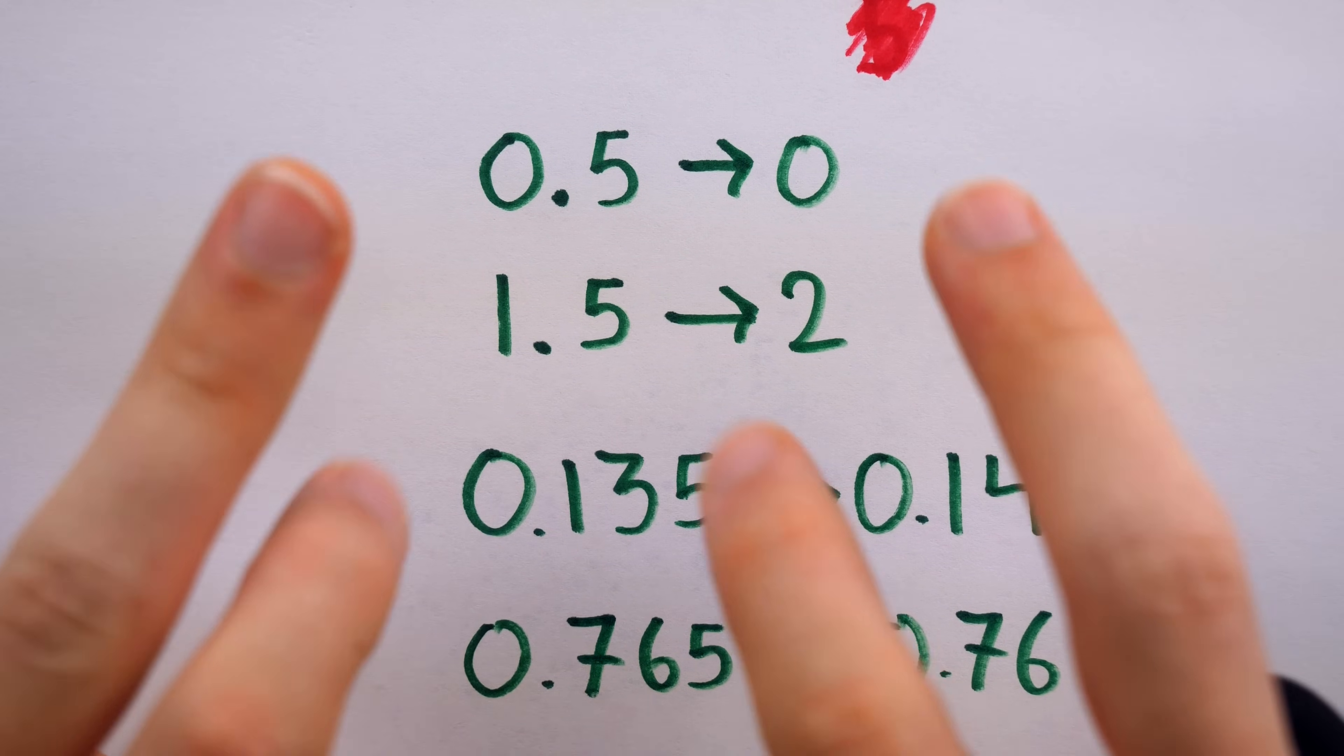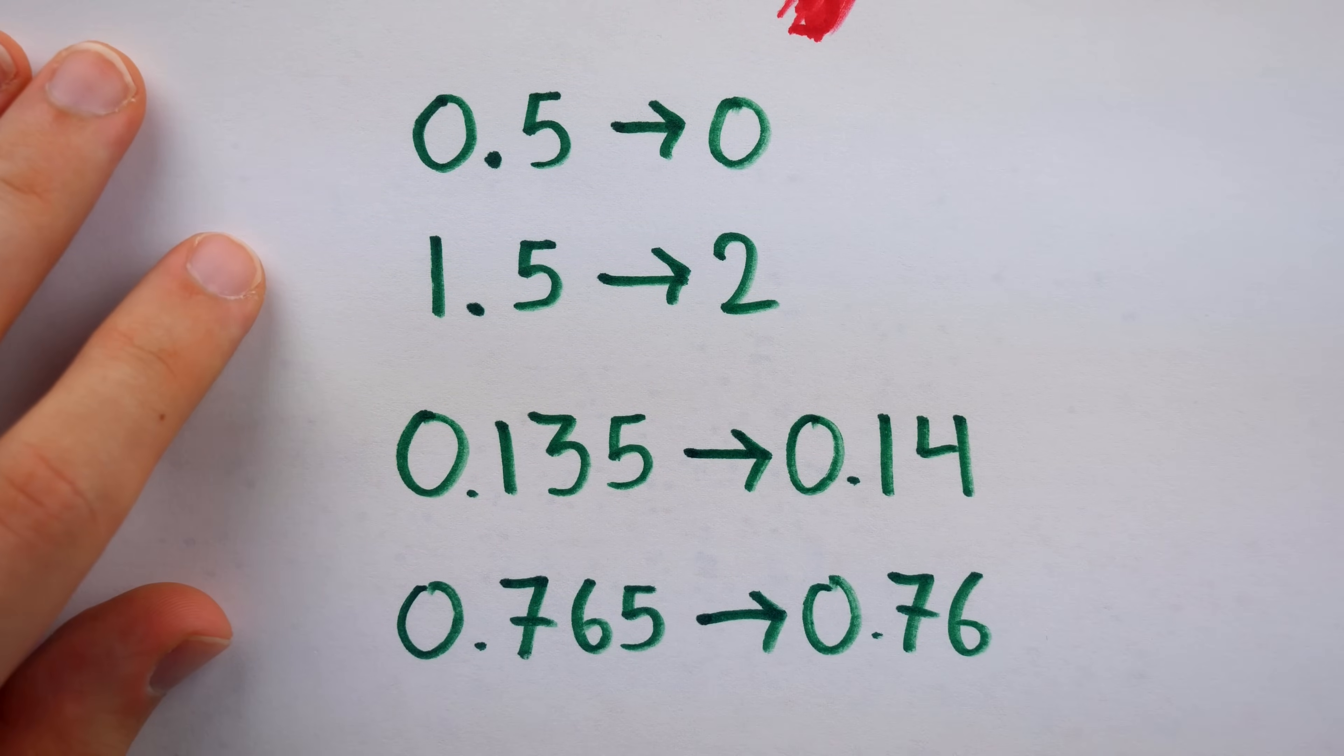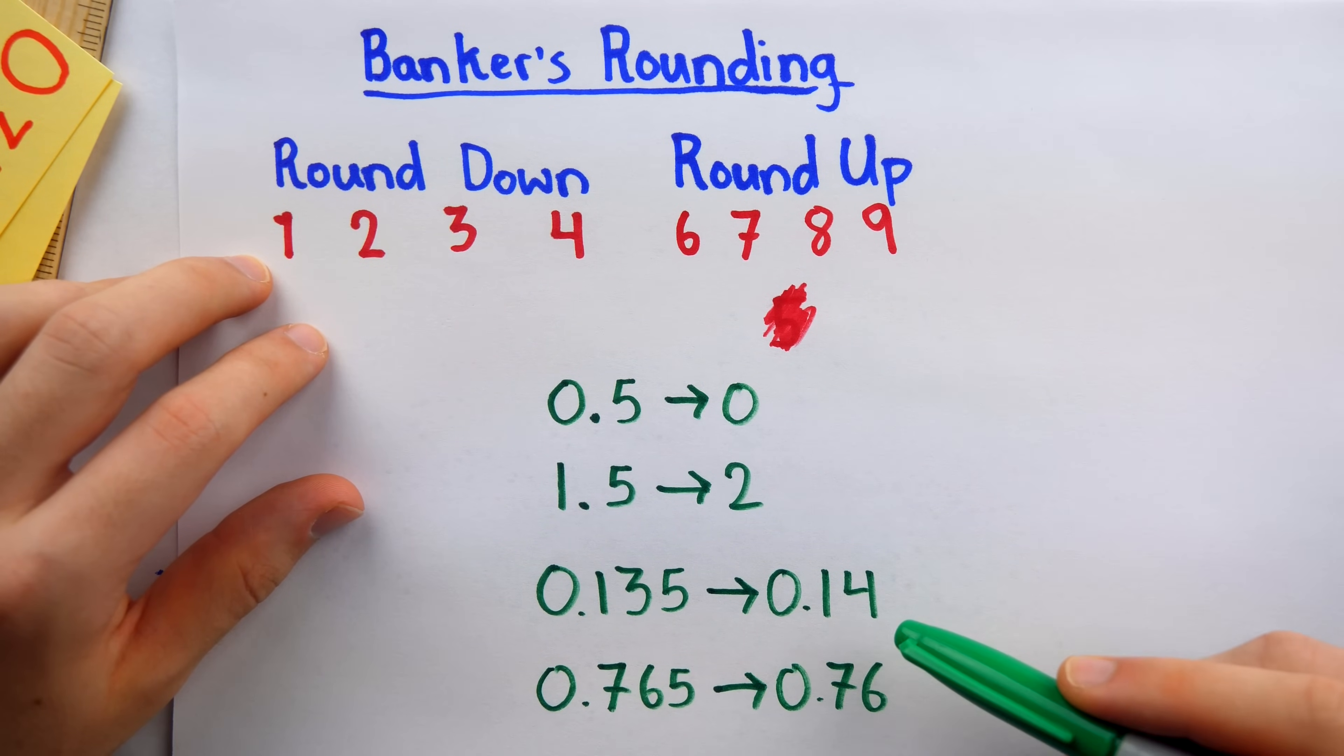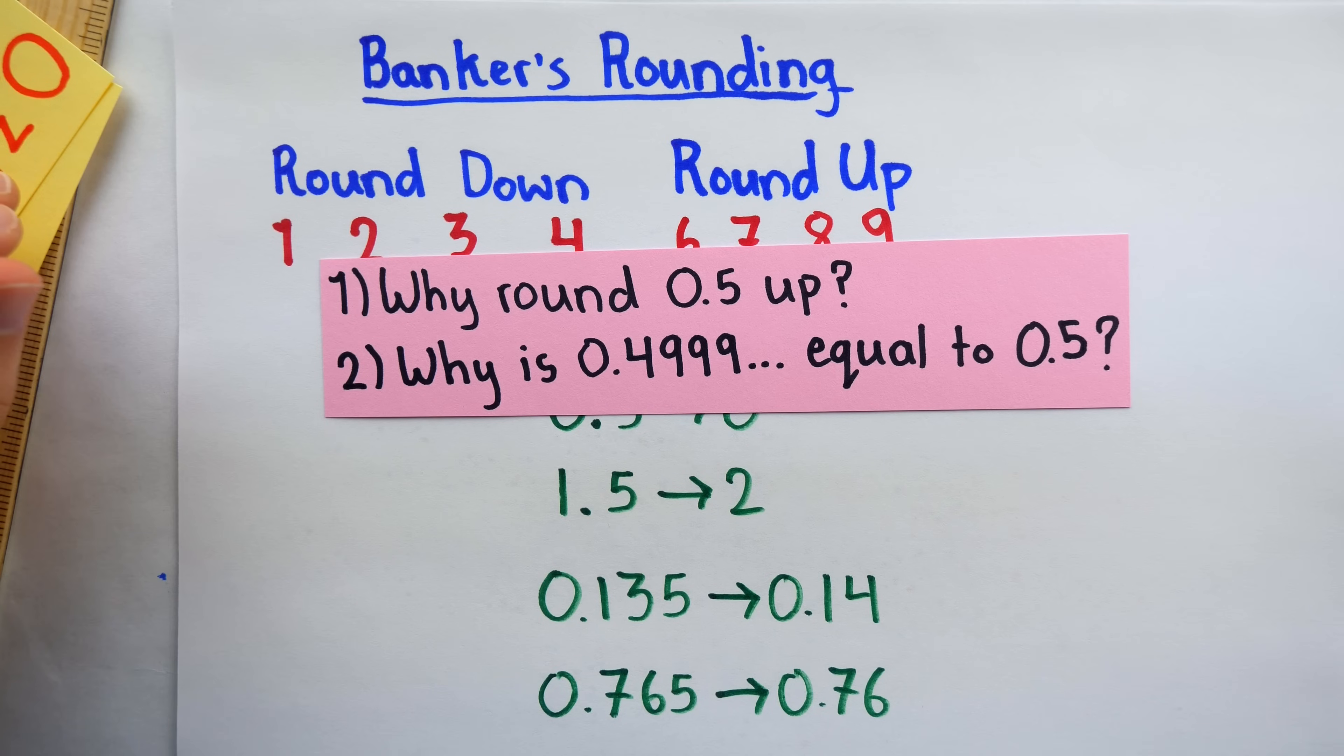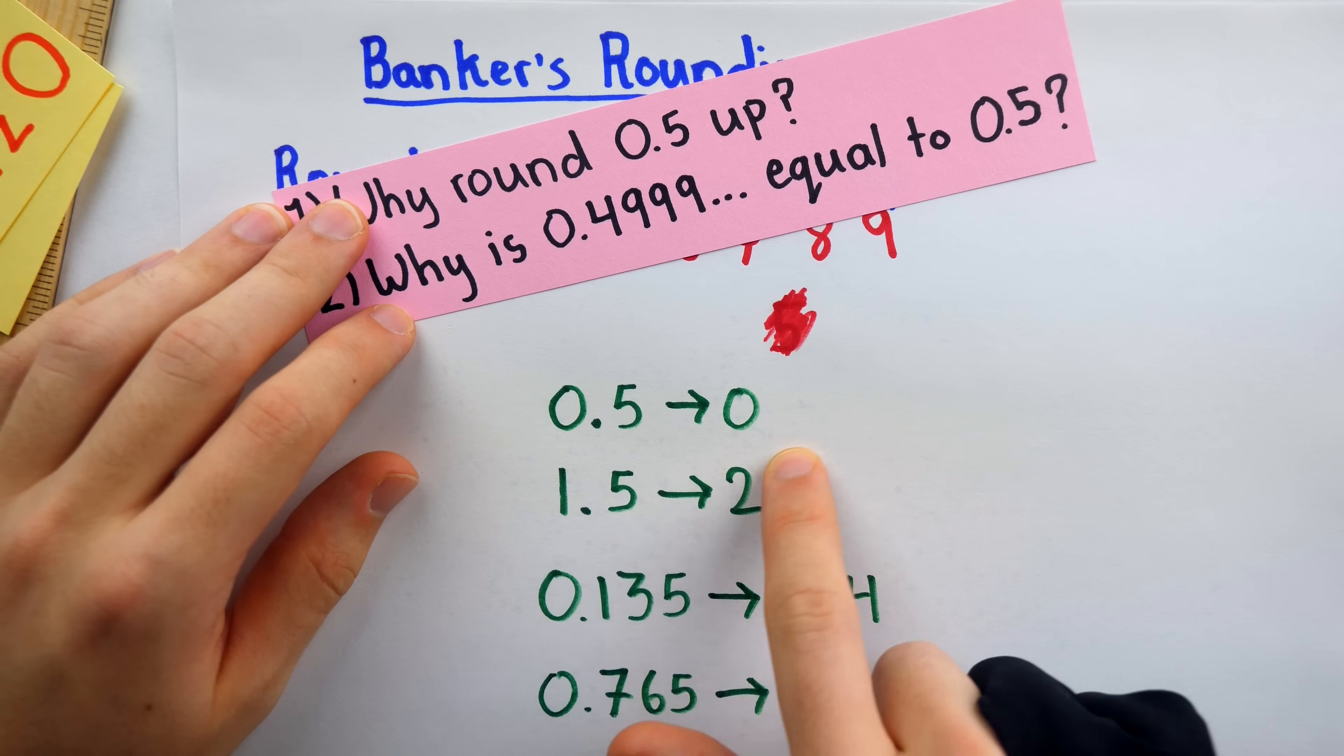Of course, I'm using the word even kind of flippantly here, but hopefully you see what I mean. This way, there's no consistent rounding up of 0.5s that causes a bias in rounded data. Of course, it does create a bias towards even numbers, but that's a bias that's usually less important in applications. So there are all sorts of reasons to round 0.5 up, though as we see, not every convention would follow that rule.